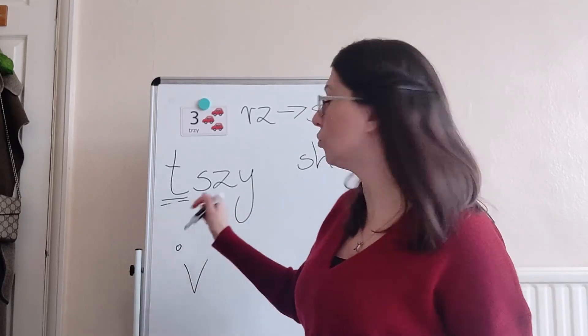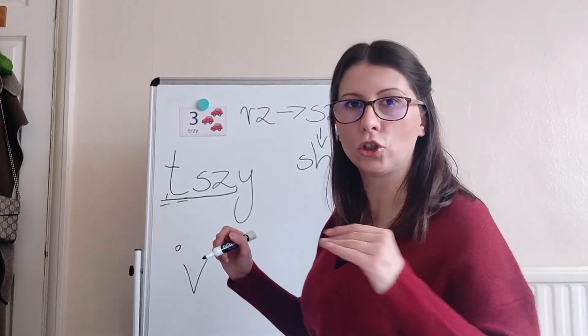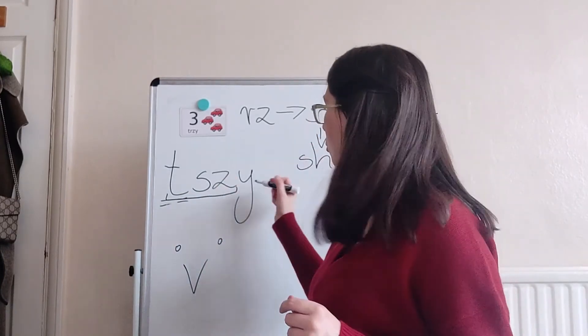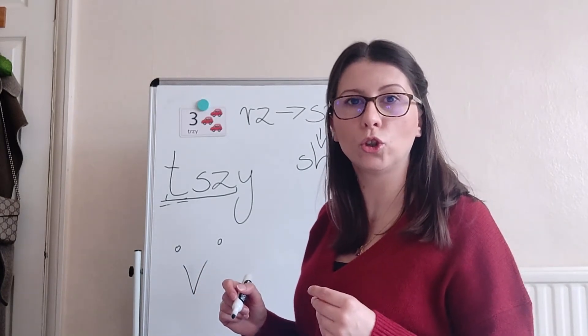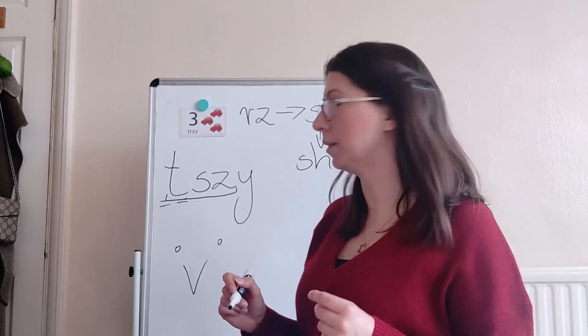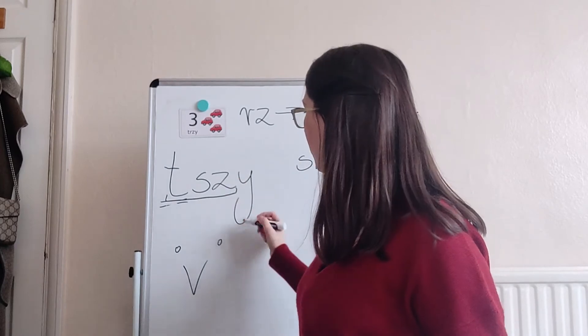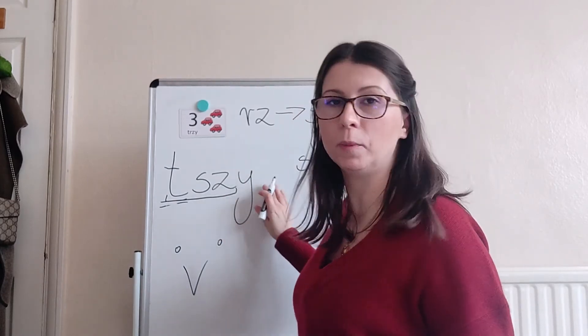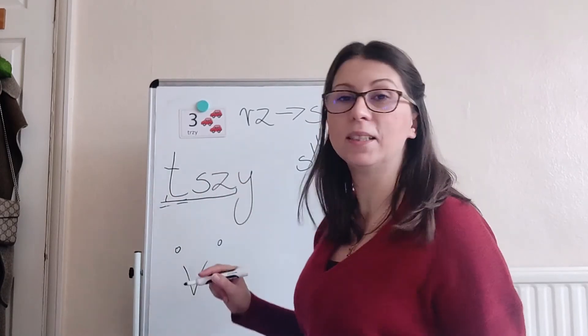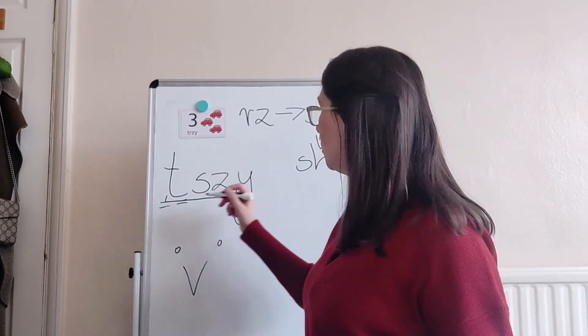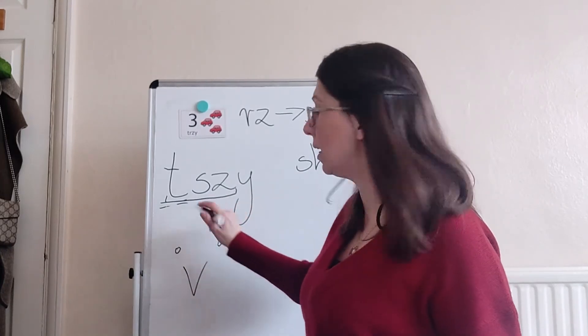Try to connect 't' and 'rzy' to make 'trzy', and then mouth movement for 'y' which is like blowing a kiss. Trzy, trzy, trzy, trzy. You always need to start there. When you're making a mouth movement for the letter 'y', you always need to start with the letter before. So it's not 'rzy', it's 'trzy', like trzy.